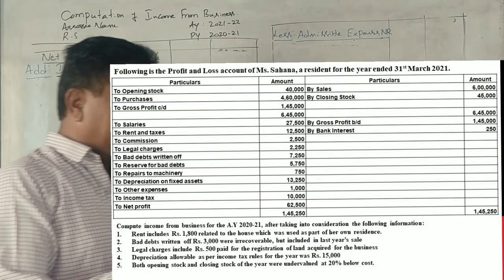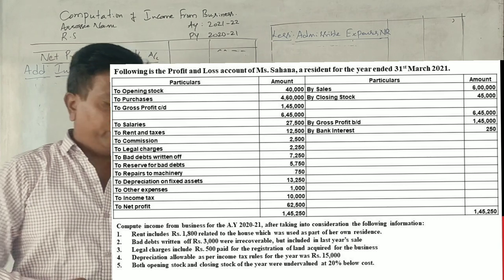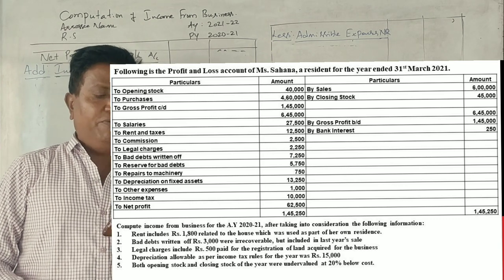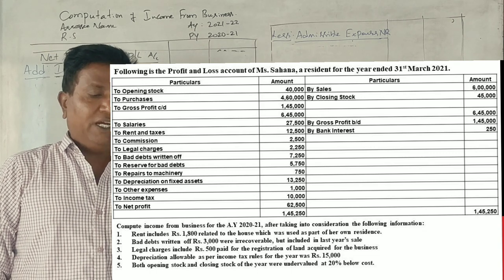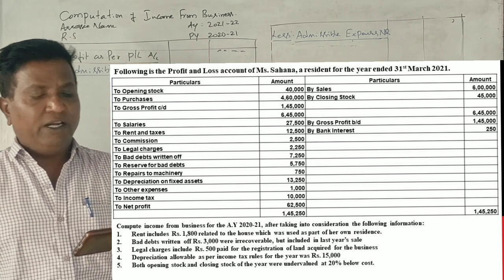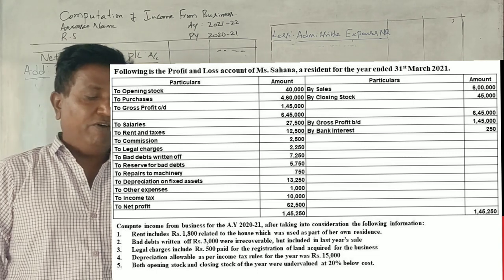This is a question from the following profit and loss account for the year ending 31st March 2021. Sri Akhil, compute taxable income from business, assessment year 2021-22.